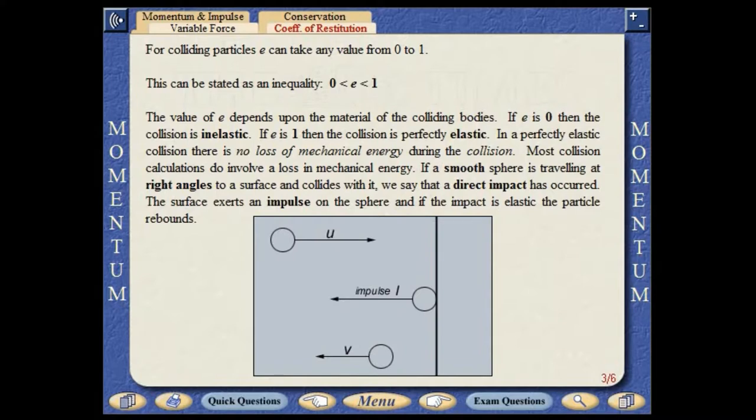If E is 0, then the collision is inelastic. If E is 1, then the collision is perfectly elastic. In a perfectly elastic collision, there is no loss of mechanical energy during the collision. Most collision calculations do involve a loss in mechanical energy.